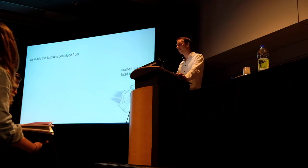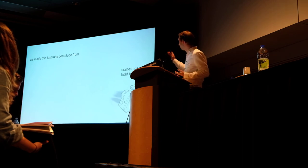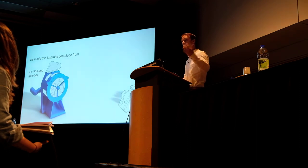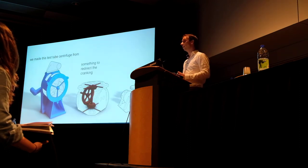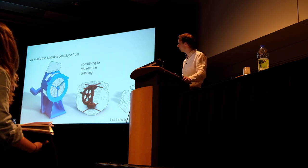Looking at the centrifuge we saw in the beginning: we made it by taking something that holds test tubes in place, taking a crank and a gearbox from another machine, and something to redirect that cranking. The key question is how does one remix these together — how do you make something more interesting out of this?